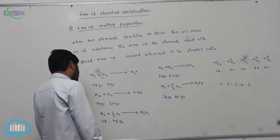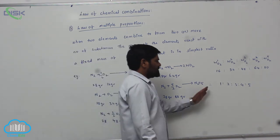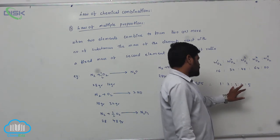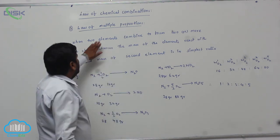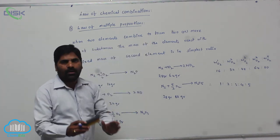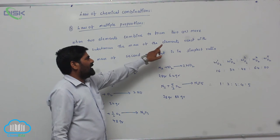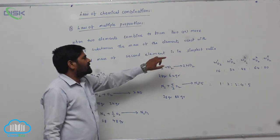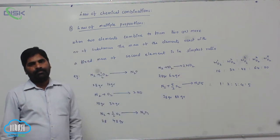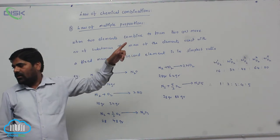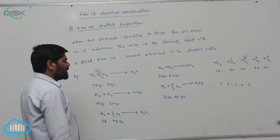Here, the second element is nitrogen (fixed), and the first element is oxygen (varying). The oxygen masses are in the ratio 1 : 2 : 3 : 4 : 5. So when two elements combine to form two or more compounds, the mass of one element reacting with a fixed mass of the second element is always in the simplest ratio. This particular law is known as the Law of Multiple Proportions.